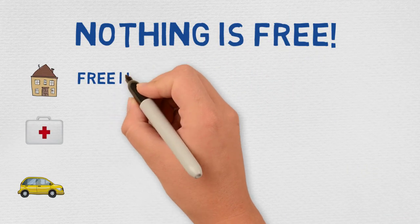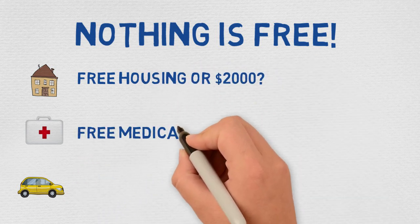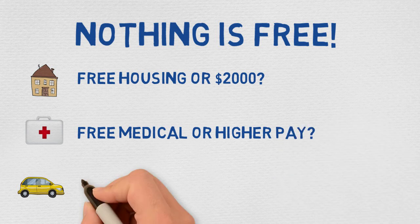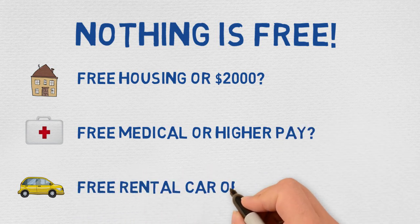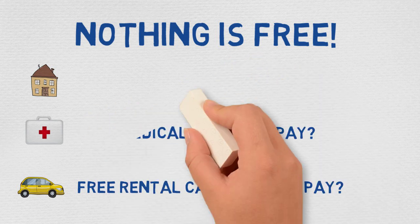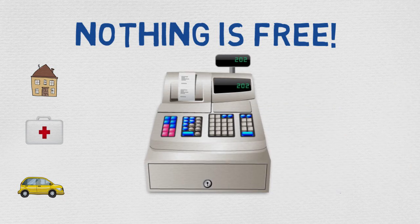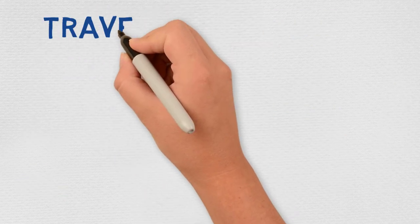For example, agencies will routinely tell you that you can have free housing or you can have a $2,000 stipend. You can have free medical benefits or you can have a higher hourly rate. You can have a free rental car or you can have a higher hourly rate.